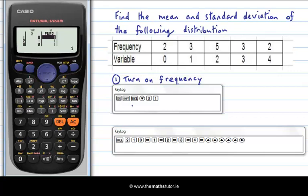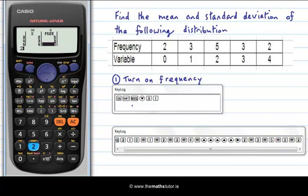So now my first frequency is two and equals. And then I have three and equals. Five equals. Three equals. And the last frequency, four, occurs twice.